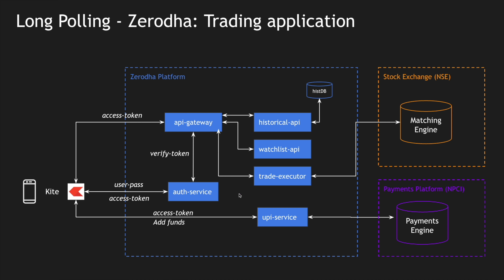In Zerodha, the moment you initiate a payment, the payment system goes to the NPCI and opens another UPI app. For example, using the Zerodha Kite mobile application, it can open another UPI service app where I can complete the payment. The UPI service in the UI just keeps on waiting, and that's where we can leverage HTTP long polling to identify whether a payment has been successful or not. Every few seconds it polls the payment platform, and once the payment is successful the payment engine responds with a success message and the transaction completes.